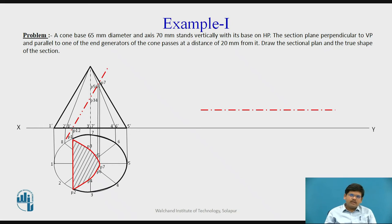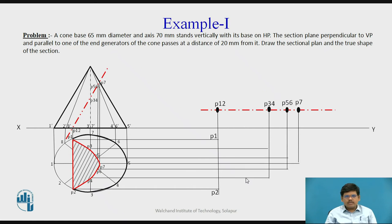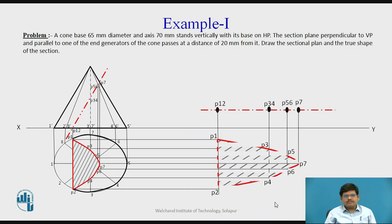Now to draw the true shape: in some videos we have seen that to draw the true shape we take a plane parallel to the cutting plane. Here we will see a different method where we draw a section plane parallel to the XY line itself. We mark the points P1, P2, P3, P4 and P7 on this new line which is parallel to the XY line. Then we project each and every point — P1 from this line and P1 from the top view, P2 similarly, and all remaining points P3, P4, P5, P6 and P7. We join these points, and this is the true shape of the section when the cone is cut by the given condition.